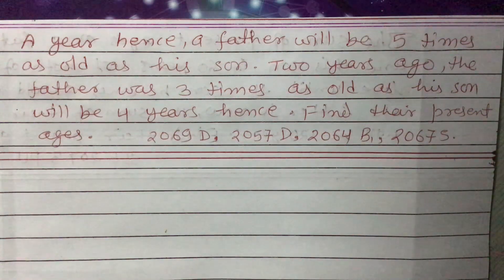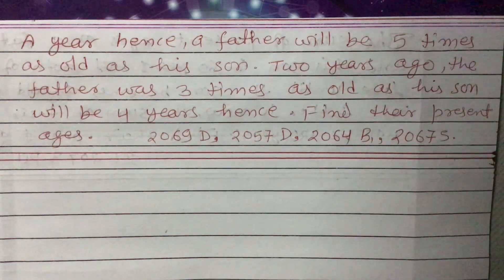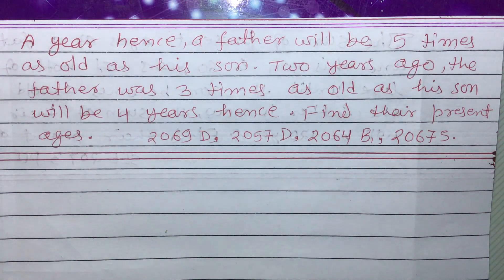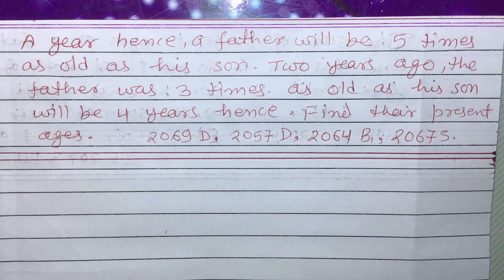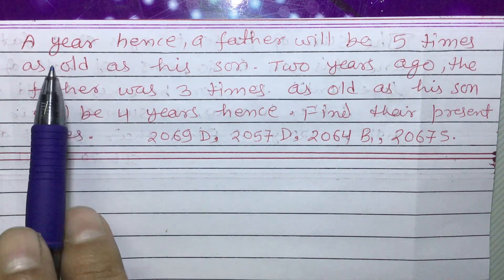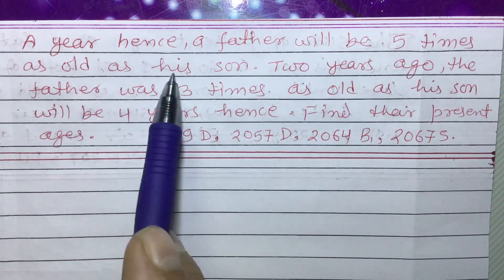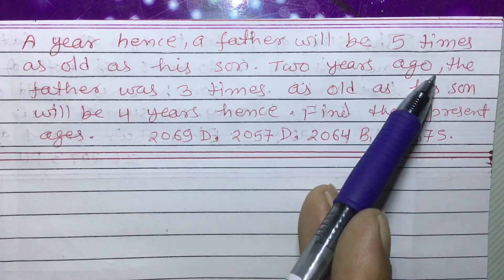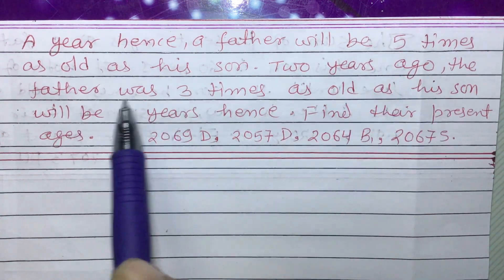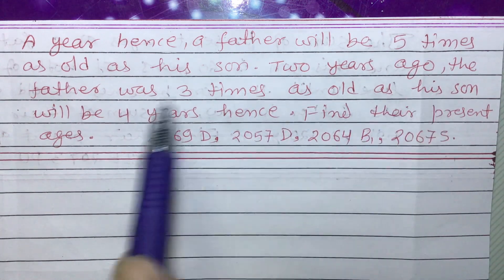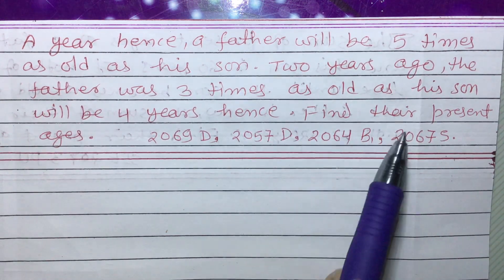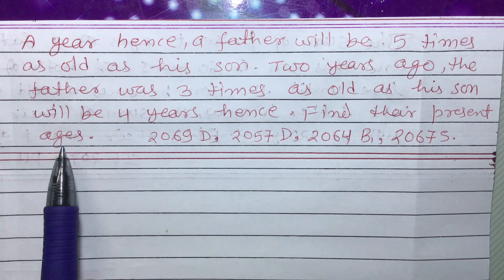Dear students, today I am going to teach you one question related to the word problem of simultaneous equations. The question is: a year hence a father will be five times as old as his son. Two years ago the father was three times as old as his son will be four years hence. Find their present ages.